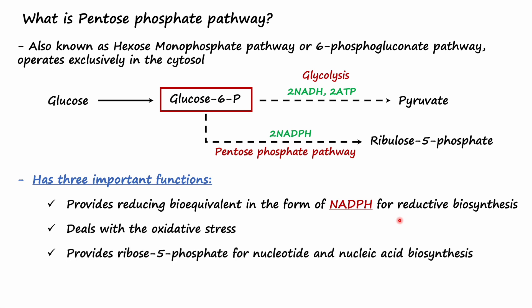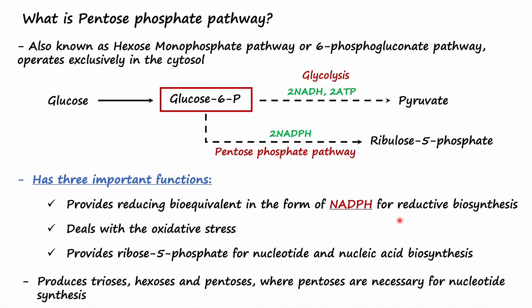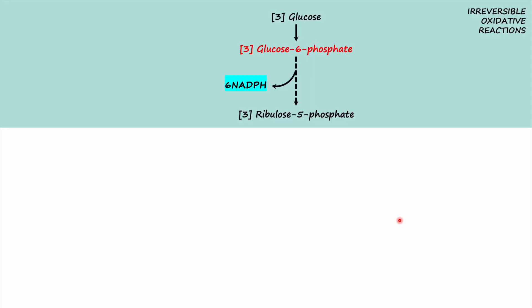The pathway also deals with oxidative stress. It provides ribose 5-phosphate for nucleotide and nucleic acid biosynthesis, and it produces trioses, hexoses, and pentoses, where pentoses are necessary for nucleotide synthesis. The pathway occurs in the cytosol in two phases. The first phase is the irreversible oxidative reaction that leads to the formation of ribulose 5-phosphate from glucose 6-phosphate, synthesizing two molecules of NADPH per glucose 6-phosphate. With three molecules of glucose 6-phosphate, six molecules of NADPH are generated.